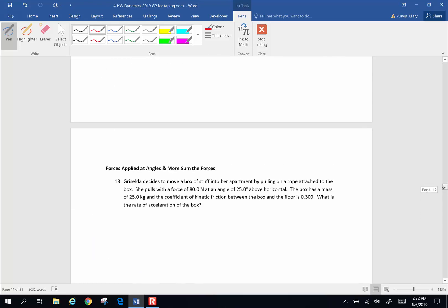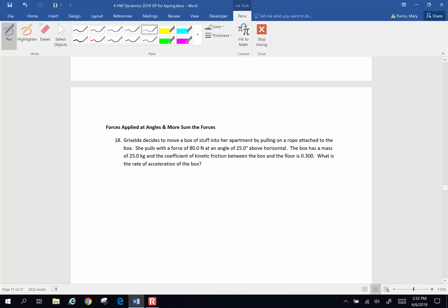Griselda decides to move a box of stuff into her apartment by pulling on a long rope attached to the box. She pulls with a force of 80 newtons at an angle of 25 degrees above horizontal. The box has a mass of 25 kilograms. The coefficient of kinetic friction between the box and the floor is 0.300. What is the rate of acceleration of the box?